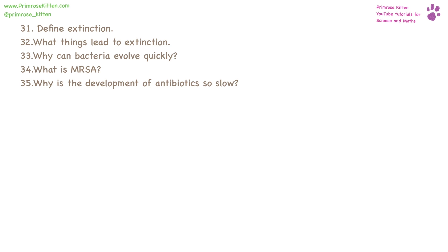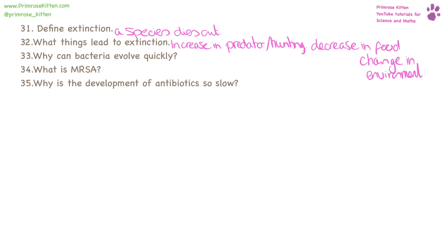Extinction is a process of species dying out. A large number of things can lead to extinction — it could be hunting, it could be an increase in predators, a decrease in food, or a change in the environment. Bacteria can evolve so quickly because they divide every 20 minutes. MRSA stands for Methicillin-Resistant Staphylococcus Aureus and it's a multi-drug resistant bacteria, meaning it is resistant to the majority of antibiotics. The development of new antibiotics is so slow because it takes a long time to find new compounds and there is not a lot of incentive for drug development companies to produce them.